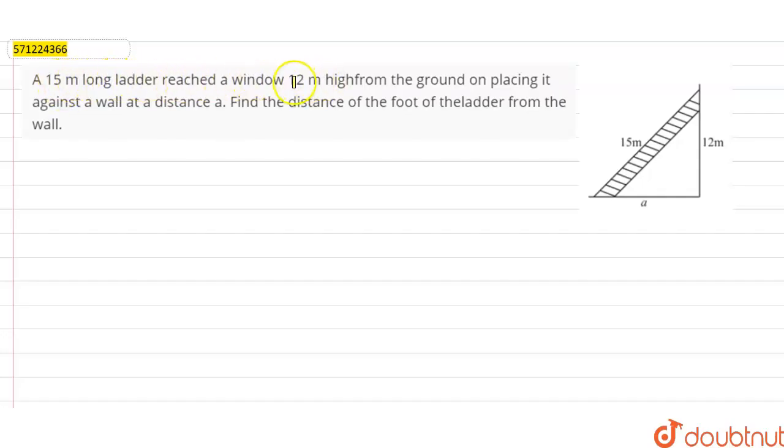A 15 meter long ladder reached a window 12 meter high from the ground on placing it against a wall at a distance a. Find the distance of the foot of the ladder from the wall.